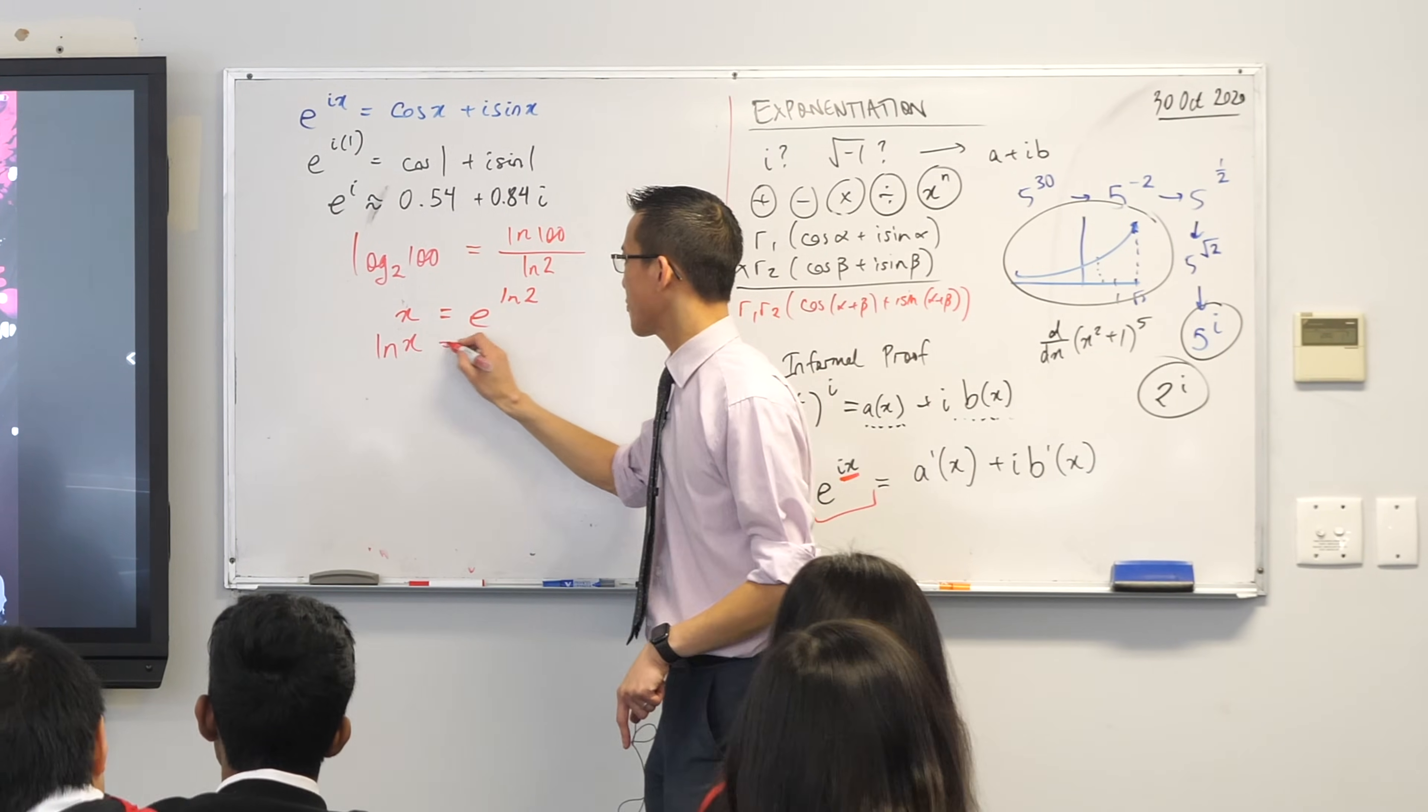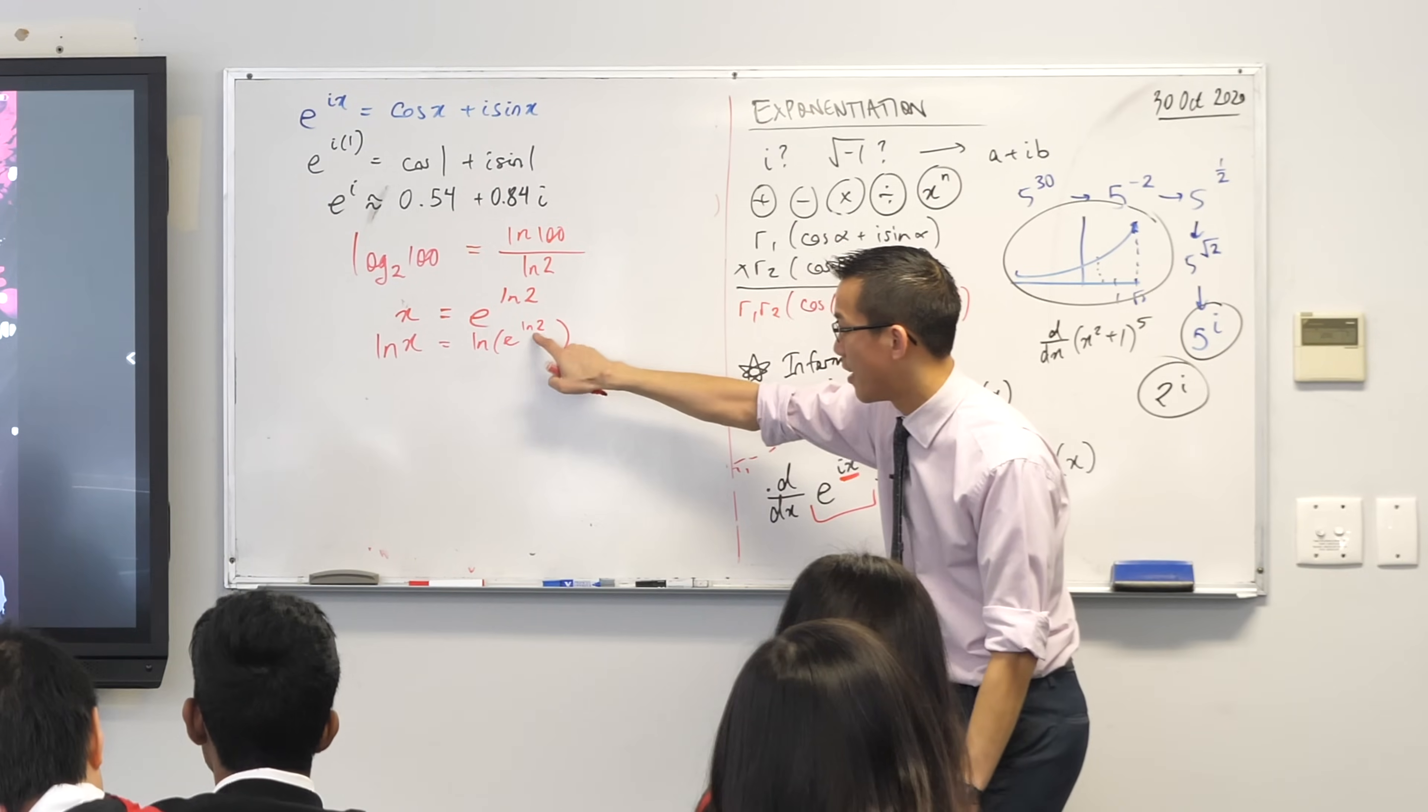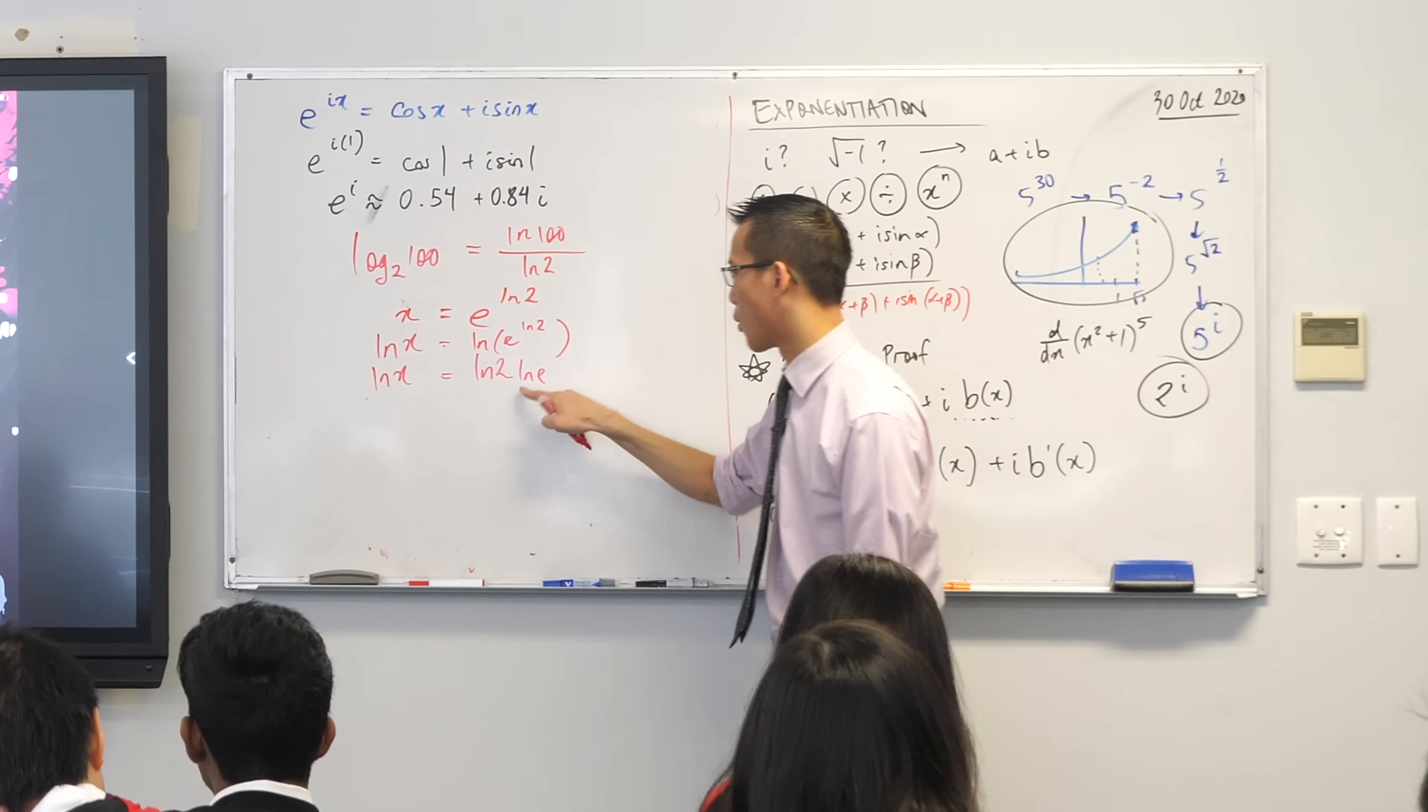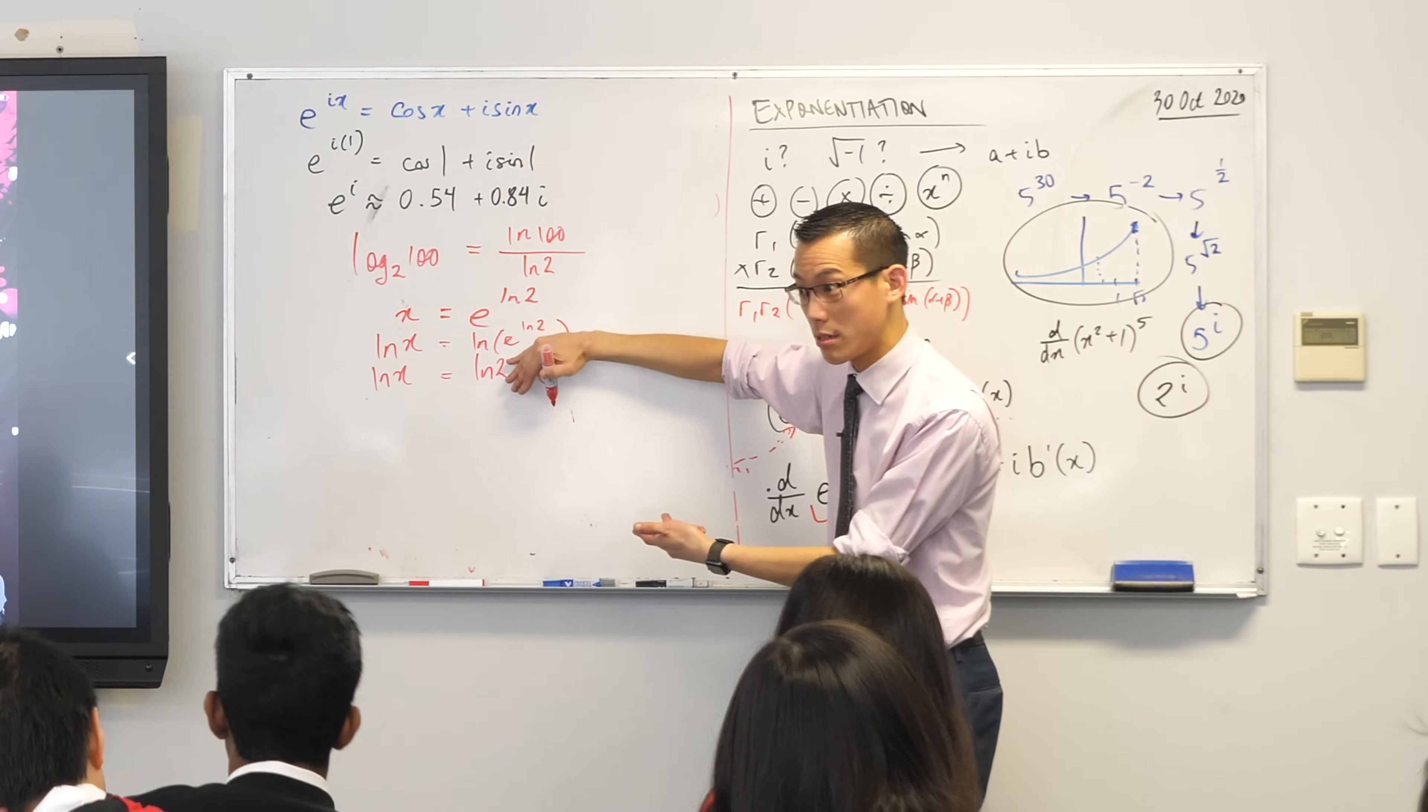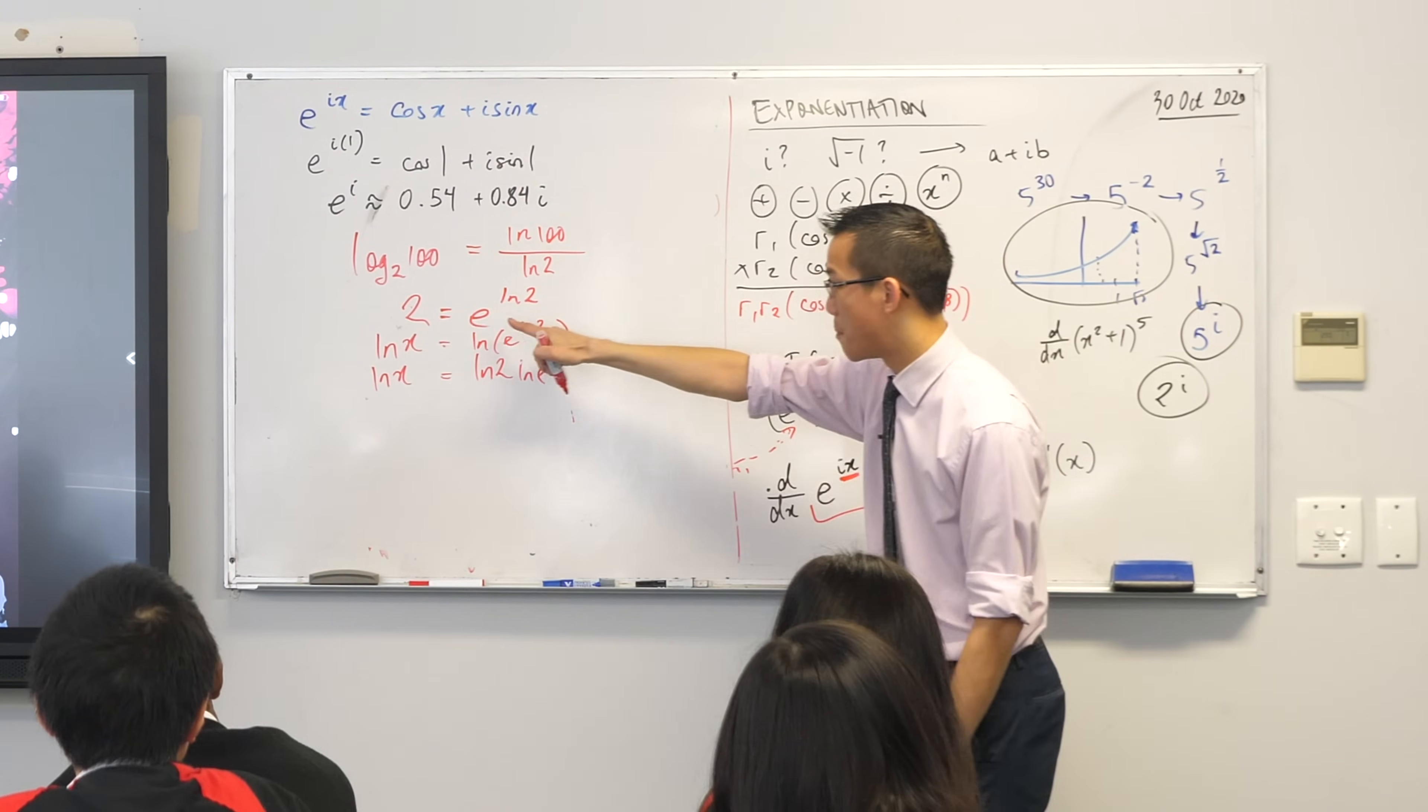Well, hopefully what you might instinctively do is take logs of both sides, which would give you this. Like so. Is that okay? I took logs of both sides. And then you've got a power up here that you can bring out to the front. So you get this. Log 2, log E. But what's this guy over here? Log base E of E is just 1. So therefore, you're getting log X equals log 2. So you see X equals 2. Is that okay? So I'm going to take advantage of the fact that I can rewrite any number with a base of E.